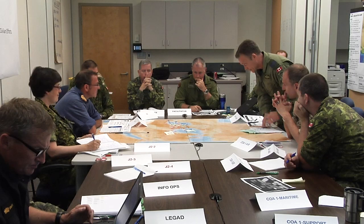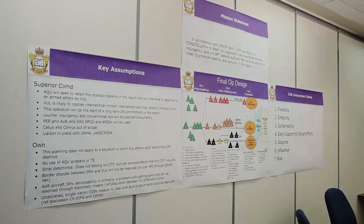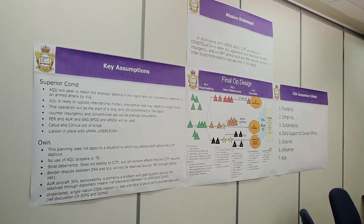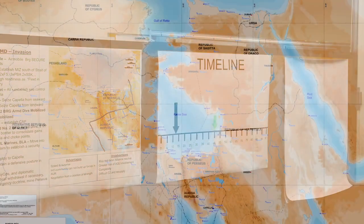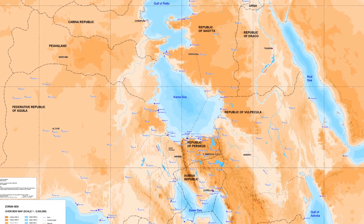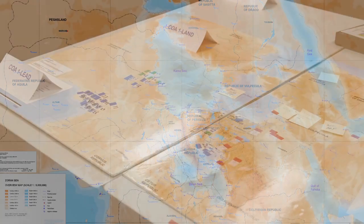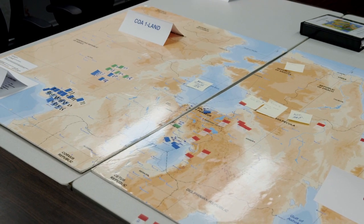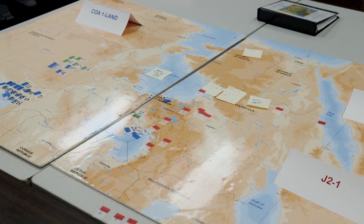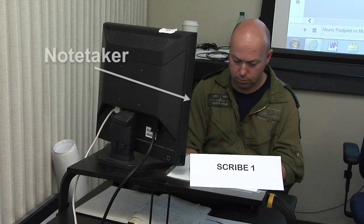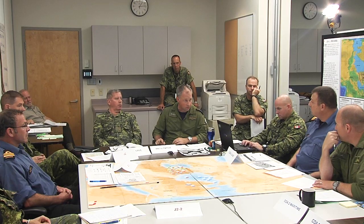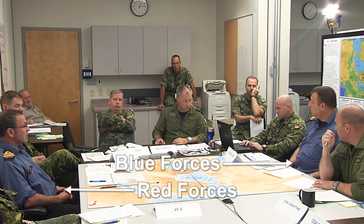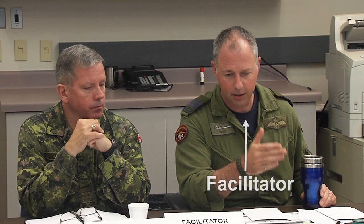Here we see an example of the room setup for a wargame. On the walls, or projected on the screen, we see the op design and timeline, and various SMEs seated on the periphery. On the table, you see a chart of the operational area upon which force dispositions are represented. We see the note-taker, or scribe, maintain the record of the wargame, and then the key players from Blue and Red forces seated across from each other. Also seated at the table, you see the facilitator and referee.